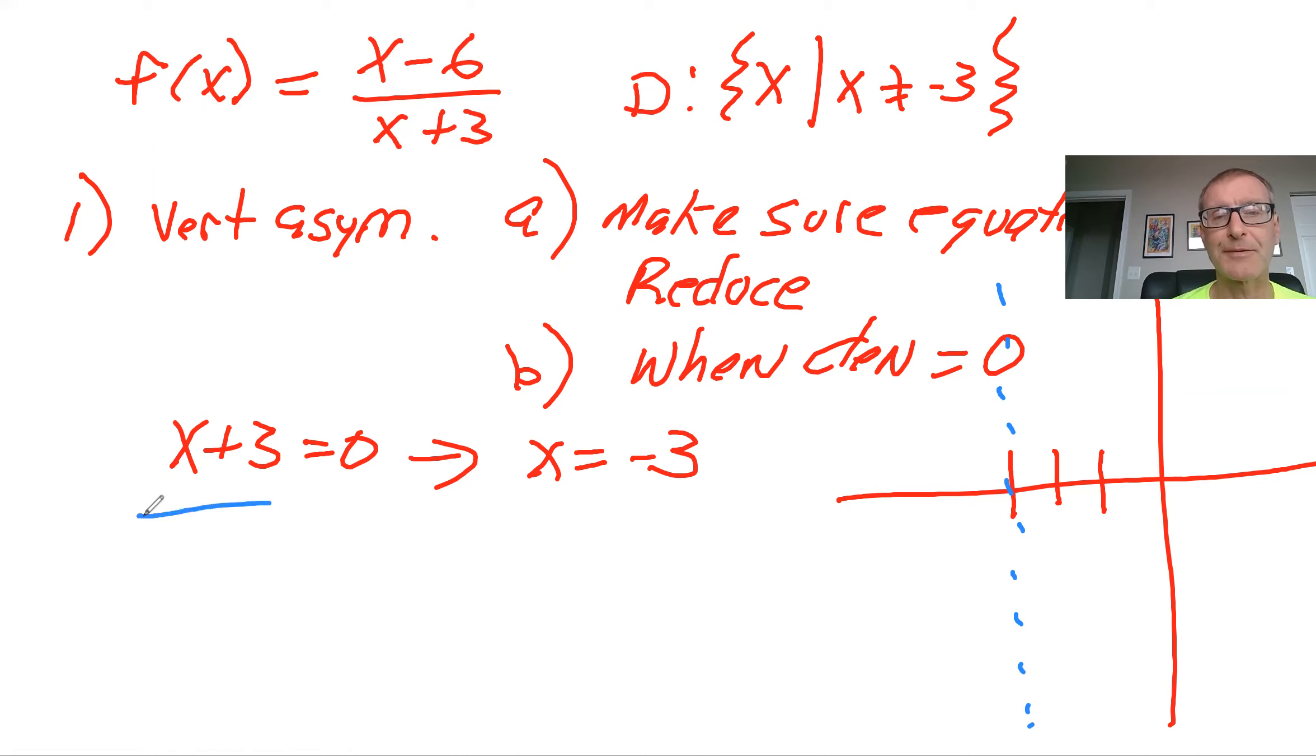And so that's the vertical asymptote. So what is the X intercept? In this case, remember that is when Y equals 0. And so when you look at this, you would get 0 equals X minus 6 over X plus 3.